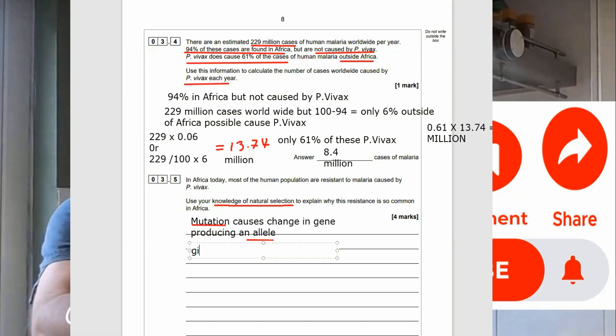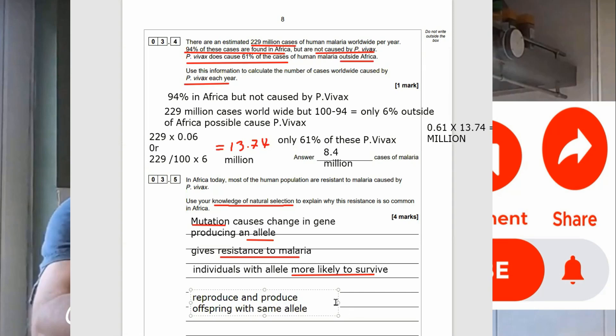We do the whole, more likely to survive, because they won't catch malaria, pass on this allele to their offspring, reproduce and pass on to their offspring, and then we need to finish with the A-level will increase the frequency of the allele in the population. So, that's the kind of difference between the GCSE. We're using the word allele a lot, and we need to end by saying the frequency of the allele is increased in the population. So, you do the whole, more likely to survive, more likely to mate successfully or reproduce or breed, produce offspring that contain the allele. At GCSE, you'd say this is repeated over many generations, which we can still say here, increasing the frequency of the allele in the population. And that's the end of question three.